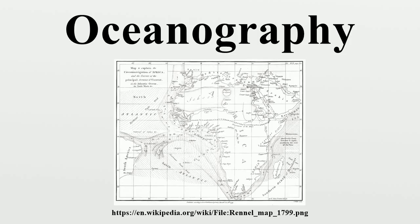The first superintendent of the United States Naval Observatory, Matthew Fontaine Morey, devoted his time to the study of marine meteorology, navigation, and charting prevailing winds and currents. His 1855 textbook Physical Geography of the Sea was one of the first comprehensive oceanography studies. Many nations sent oceanographic observations to Morey at the Naval Observatory, where he and his colleagues evaluated the information and distributed the results worldwide.